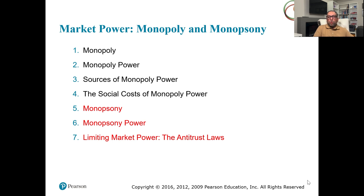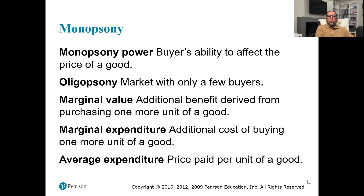What we call antitrust loss — monopsony power is a buyer's ability to affect the price of a good. There is also a related concept: oligopsony, which means there are few buyers. For a buyer, we have marginal value and marginal expenditure.